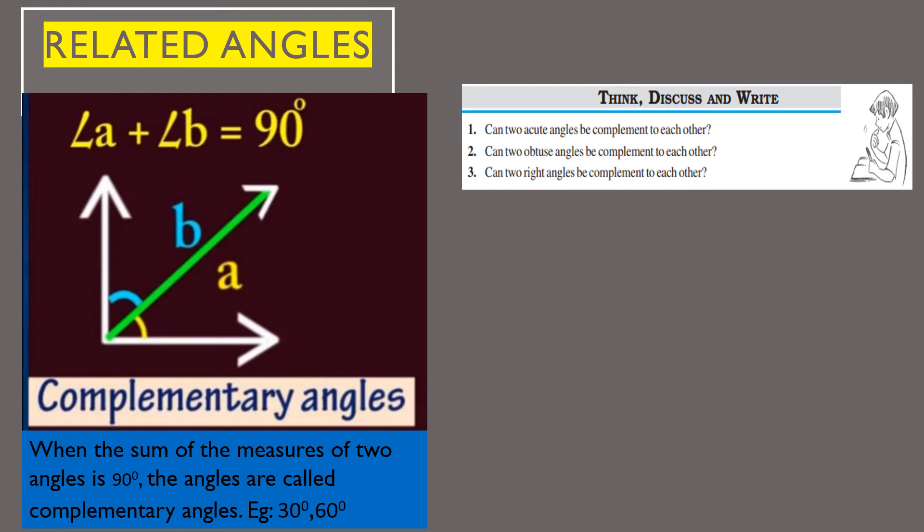Second question: can two obtuse angles be complementary to each other? No, it is not at all possible, because the sum of two angles must equal 90 degrees for them to be complementary, and an obtuse angle is already greater than 90 degrees, so this case is not possible. Third question: can two right angles be complementary to each other? No, it is also not possible, because one right angle is already 90 degrees, so the sum of two right angles cannot equal 90 degrees.